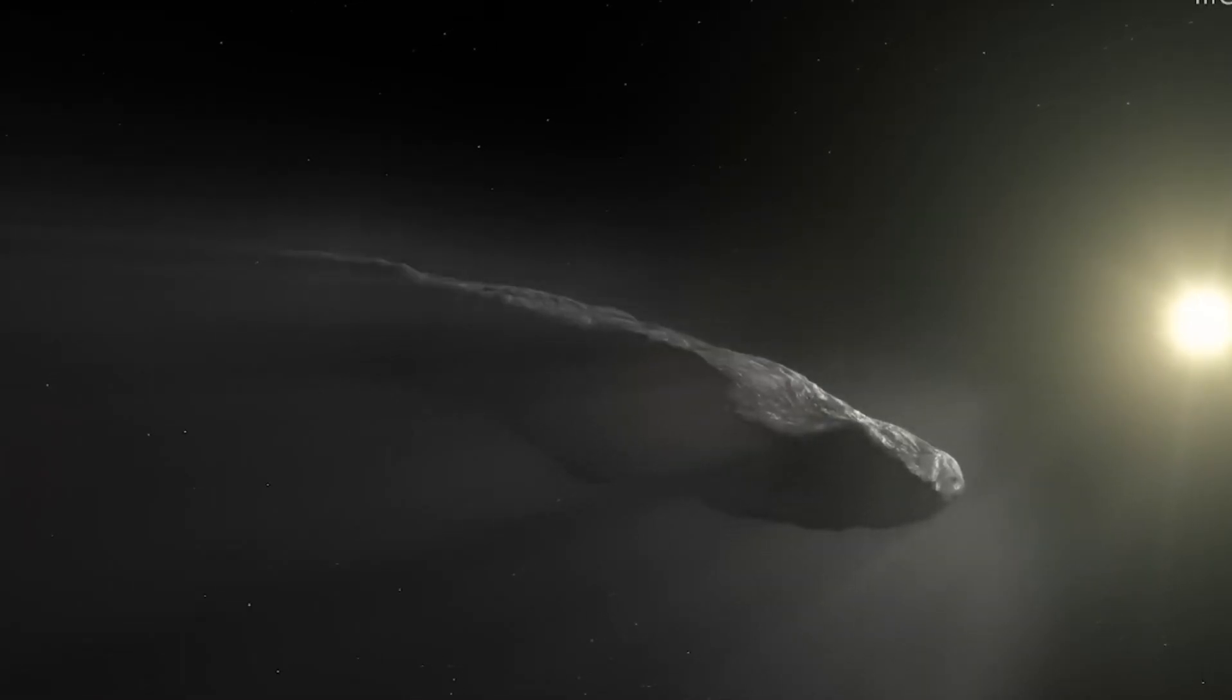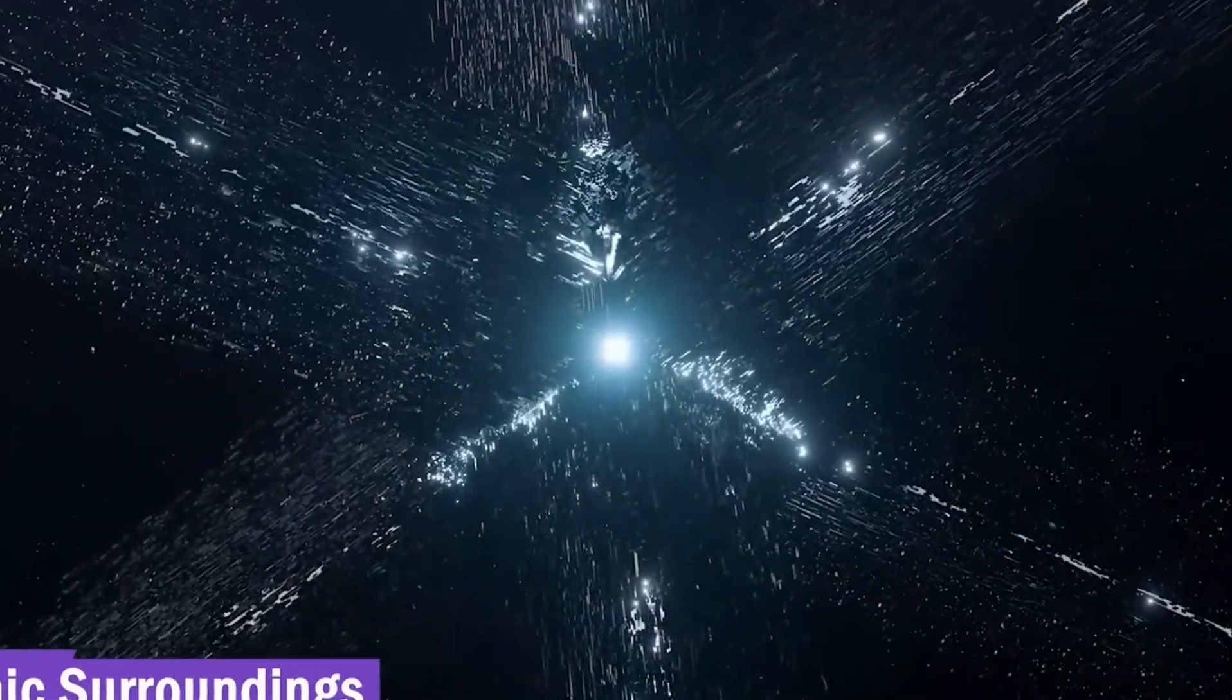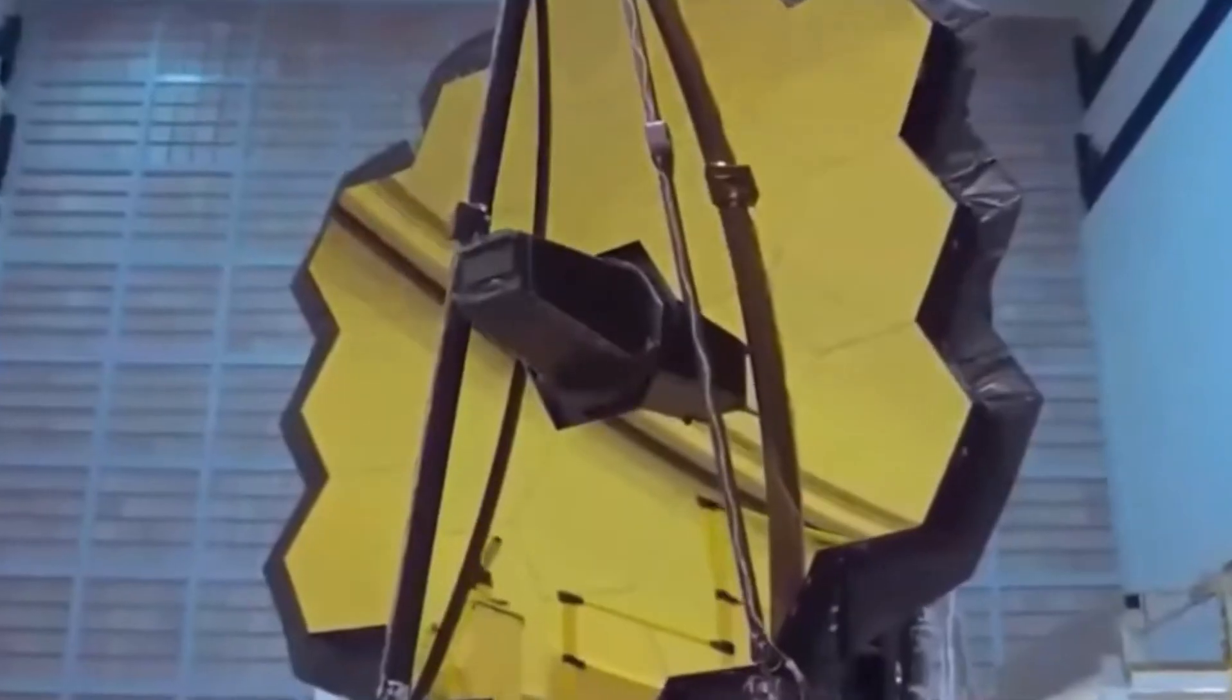One of the most significant contributions of the James Webb Telescope's observations was dispelling some of the initial speculation surrounding Oumuamua. While its unique properties initially fueled theories of extraterrestrial origins or artificial construction, the telescope's data confirmed that it was a natural object, albeit with extraordinary characteristics.